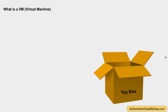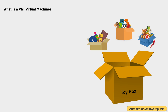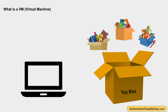First, let us see what's a virtual machine. Imagine you have a toy box and this is a magical toy box, and using this toy box you can create some more imaginary toy boxes. All these toy boxes are imaginary boxes, but you can use them as real physical toy boxes. You can put your toys inside these boxes, you can play with the toys, and when you are done playing, if you want, you can also remove or delete these toy boxes.